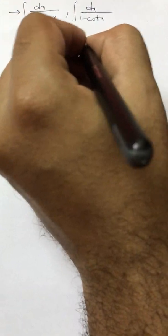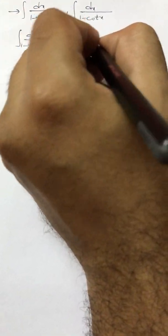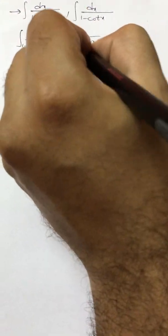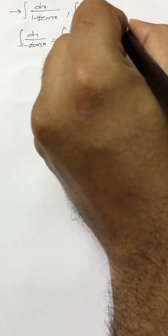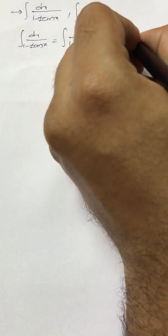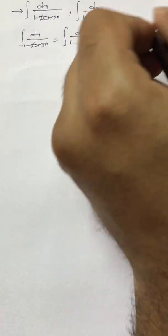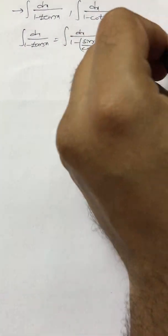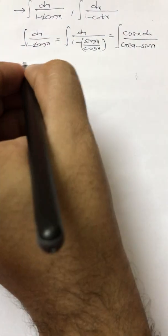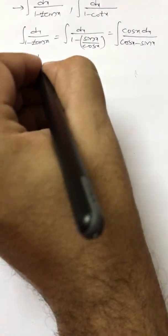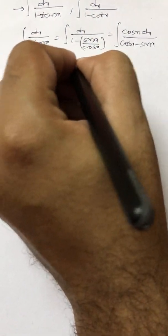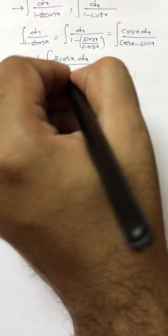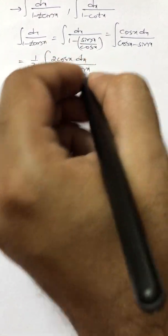So dx by 1 minus sine x by cos x. If I take the LCM, it will be cos x dx by cos x minus sine x. What we have to do is we will multiply and divide by 2. If I multiply and divide by 2, it is 1 by 2 into 2 cos x by cos x minus sine x.